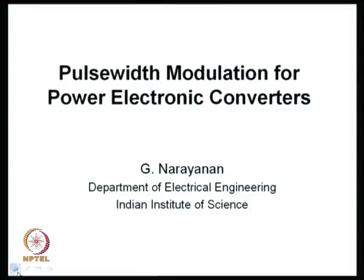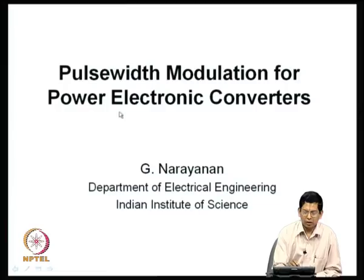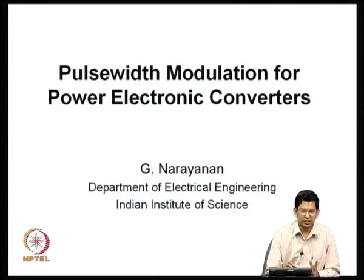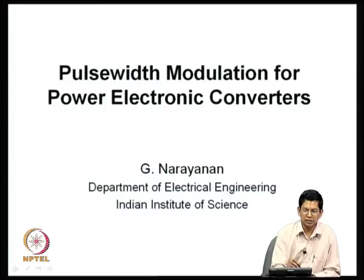In the title you find two terms: one is pulse width modulation, and the other is power electronic converters. These power electronic converters include several types such as DC to DC converters — going by names like step-down choppers or step-up choppers — and voltage source inverters and current source inverters.